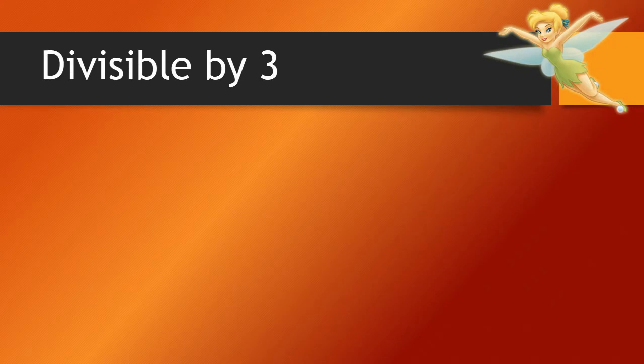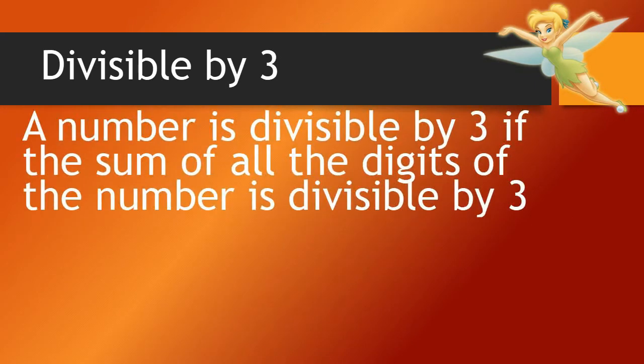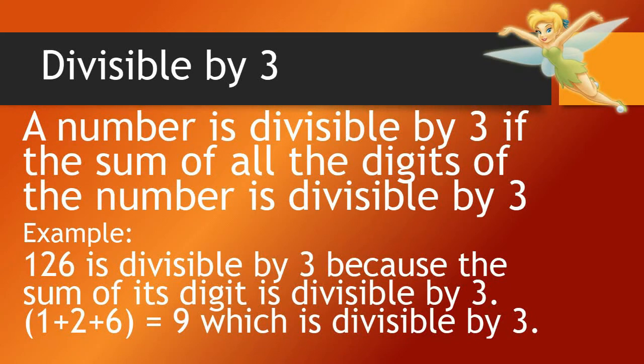Divisible by 3: a number is divisible by 3 if the sum of all the digits of the number is divisible by 3. Example: 126 is divisible by 3 because the sum of its digits is divisible by 3. 1 plus 2 plus 6 equals 9, which is divisible by 3.